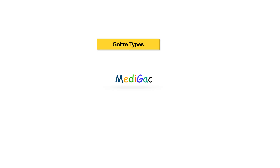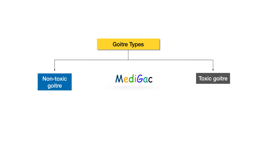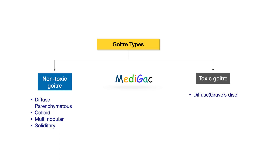Let's discuss the types of goiter. There are mainly two types: simple or non-toxic goiter, and toxic goiter. Simple non-toxic goiter can be diffuse parenchymatous, colloid, multinodular, or solitary. Toxic goiter can be diffuse due to Graves' disease, multinodular, or toxic adenoma.